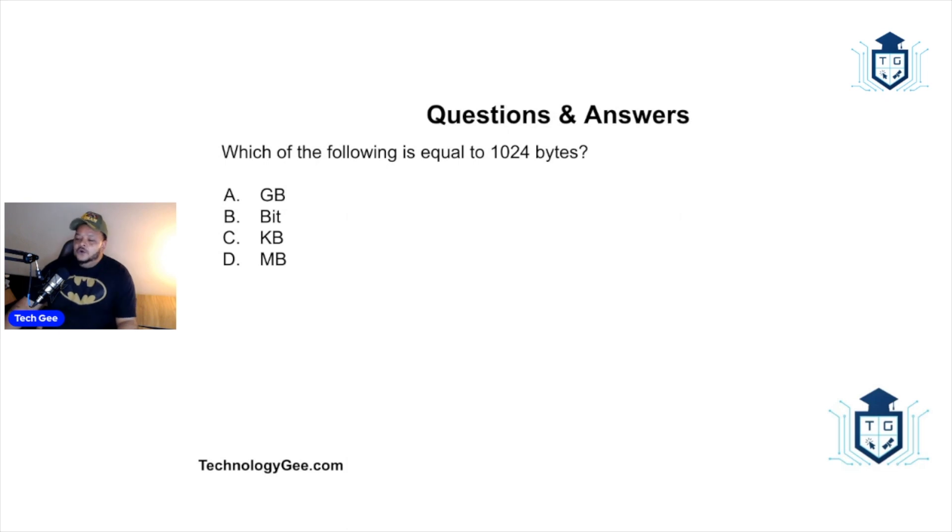The first question is: which of the following is equal to 1024 bytes - would this be a gigabyte, a bit, kilobyte, or megabyte? The correct answer would be a kilobyte. A kilobyte is equal to 1024 bytes. We all understand what a byte is - one byte is equal to eight bits. So instead of us having to worry about how many bits are in it, we just deal with bytes, and 1024 bytes will get you one kilobyte.